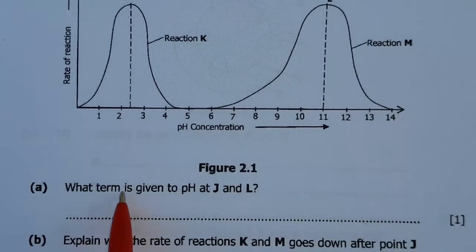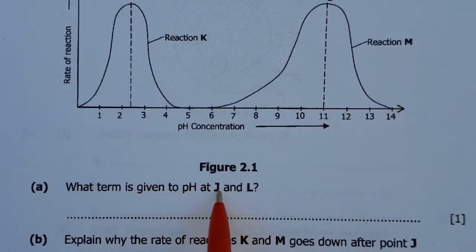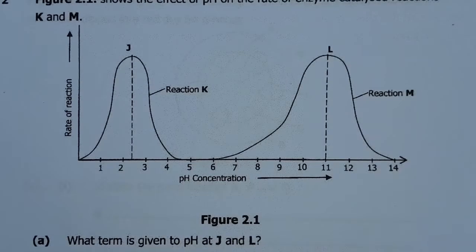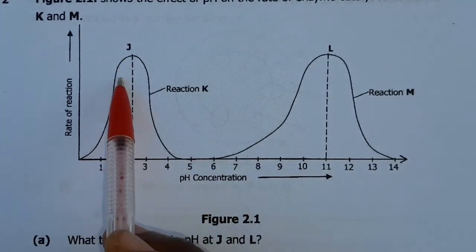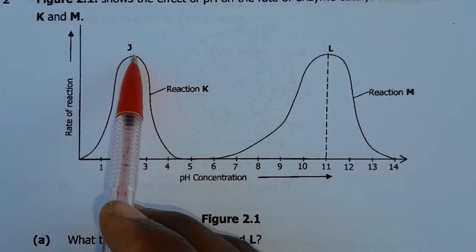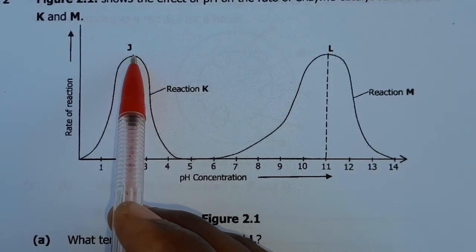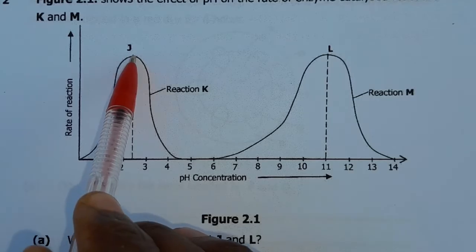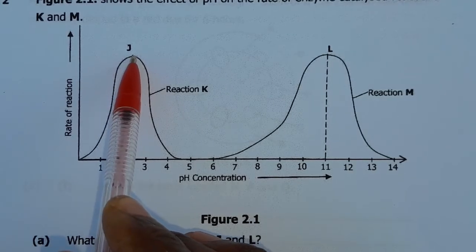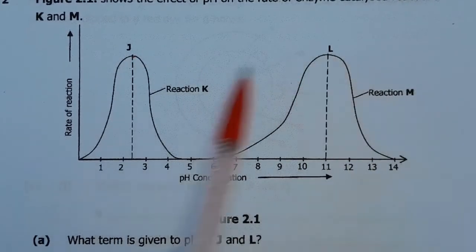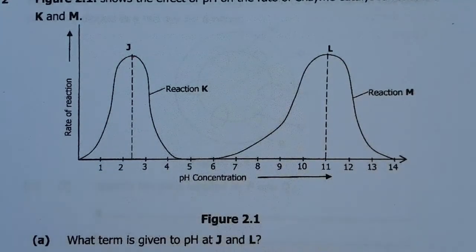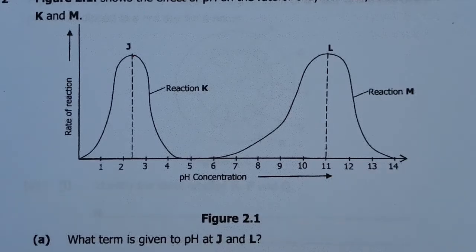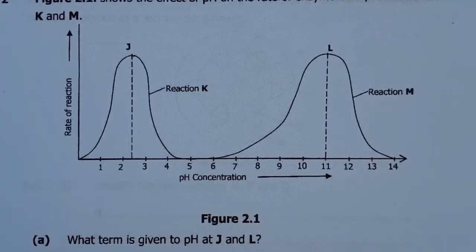Part A. What term is given to pH at J and L? You can see that here, this is like the reaction started here, and then this was like the peak, the maximum here. The maximum reaction took place here. Even here, this is the maximum. So since J and K are at maximum, what do you call this maximum in biology? This is the optimum pH.